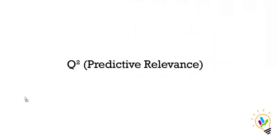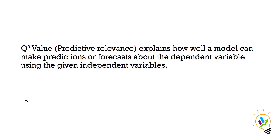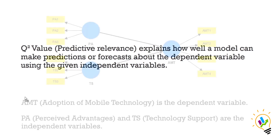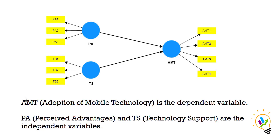In this video we will discuss Q², that is predictive relevance. The Q² value explains how well a model can make predictions or forecasts about the dependent variable using the given independent variables. For example, in this model the dependent variable is adoption of mobile technology and the independent variables are perceived advantage and technological support.